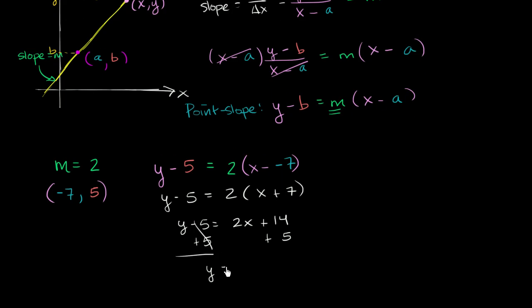And on the right-hand side, 2x plus 19. So this right over here is slope-intercept form. You have your slope and your y-intercept. So this is slope-intercept form. And this right up here is point-slope form.